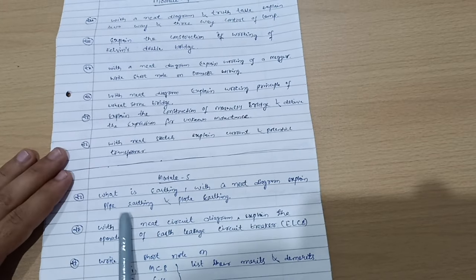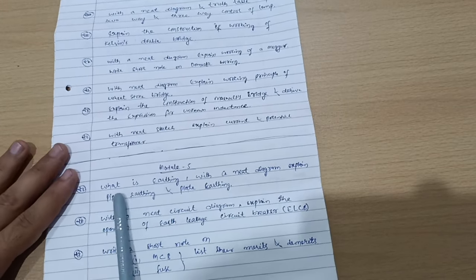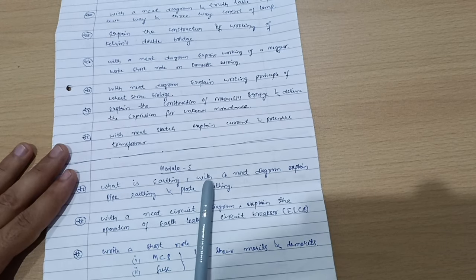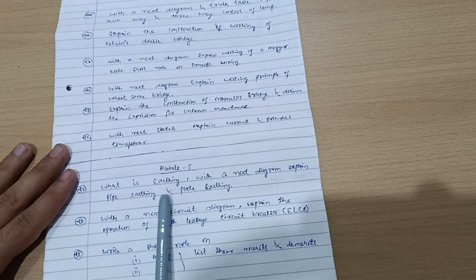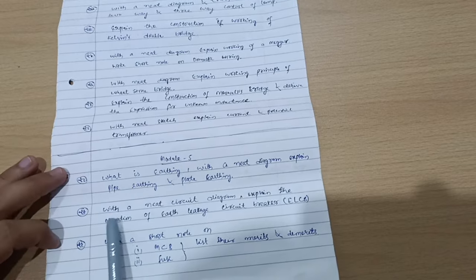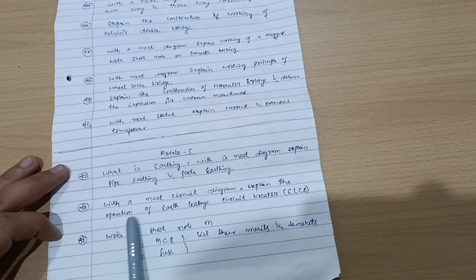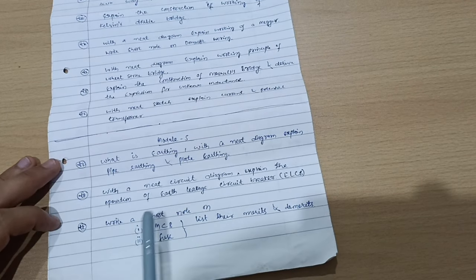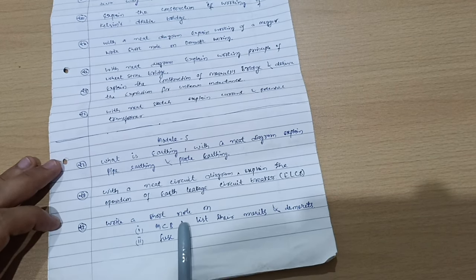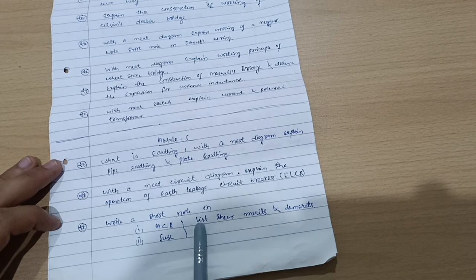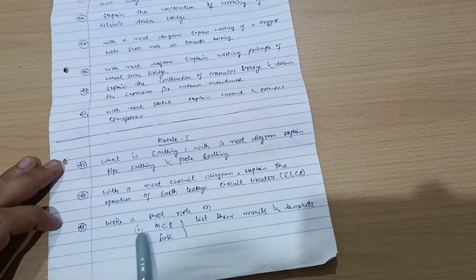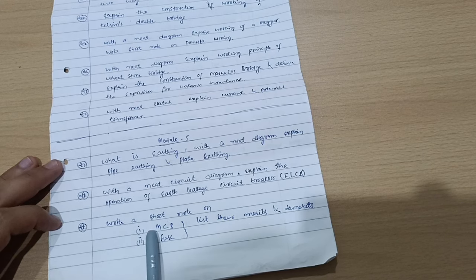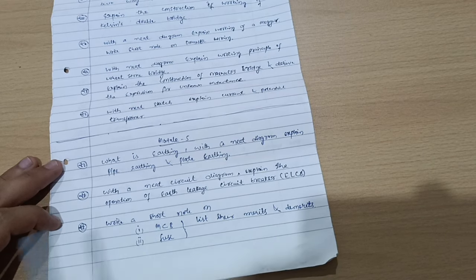Next is Module 5, which is again a passing module in which you have to cover some super important questions like what is earthing? With a neat diagram, explain pipe earthing and plate earthing. With a neat circuit diagram, explain the operation of earth leakage circuit breaker that is ELCB and write a short note on MCB, miniature circuit breaker and fuse.